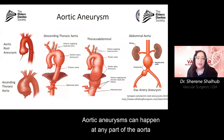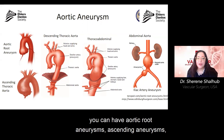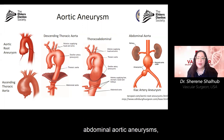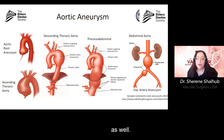Aortic aneurysms can happen in any part of the aorta. As you can see in these pictures, you can have aortic root aneurysms, ascending aneurysms, descending thoracic aneurysms, thoraco-abdominal aneurysms, abdominal aortic aneurysms, and of course iliac artery aneurysms as well.